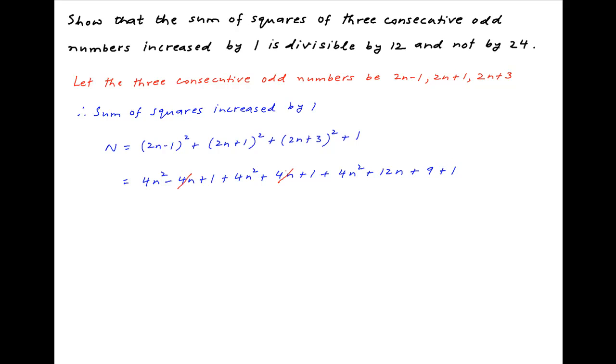A couple of terms cancel and capital N simplifies to 12n square plus 12n plus 12, and this is equal to 12 times in brackets n square plus n plus 1.